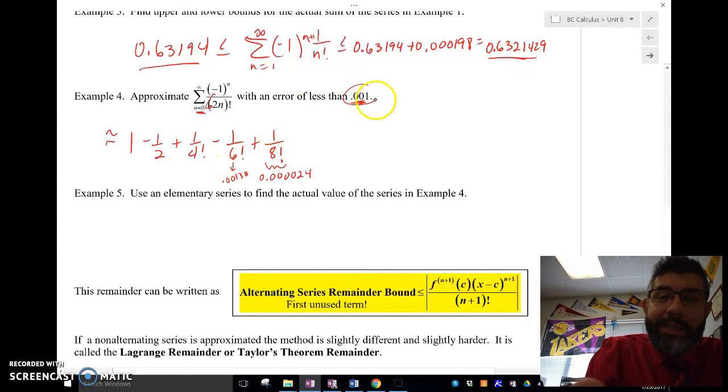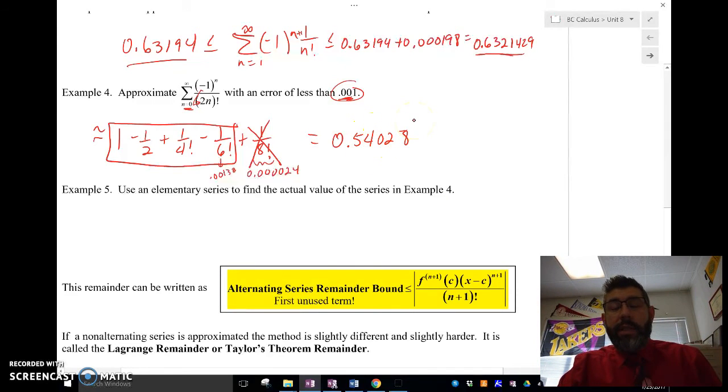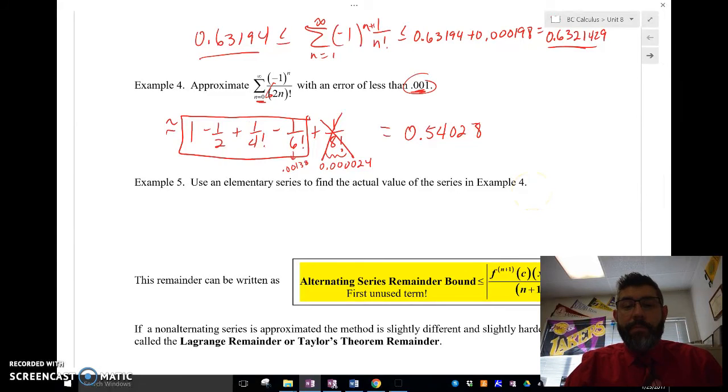So this part is going to be my error. So I want my error to be less than this. So I'm going to go to this one. I'm going to not use that term. And I'm going to add up all of these. So I'm going to add all those up. And I'm going to get my approximation that has an error that's less than 0.001.